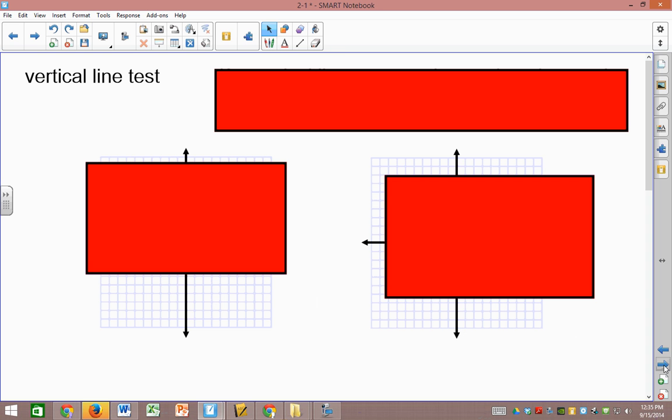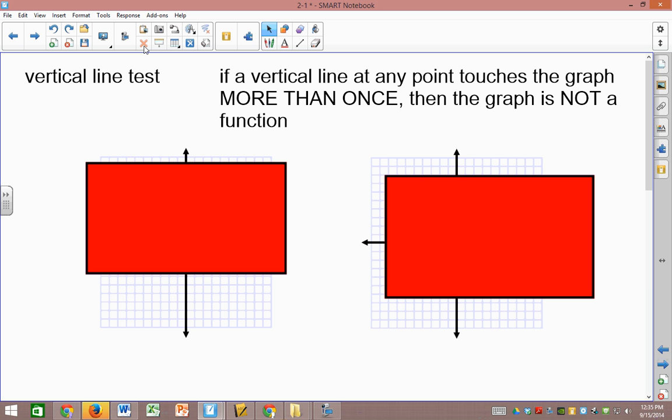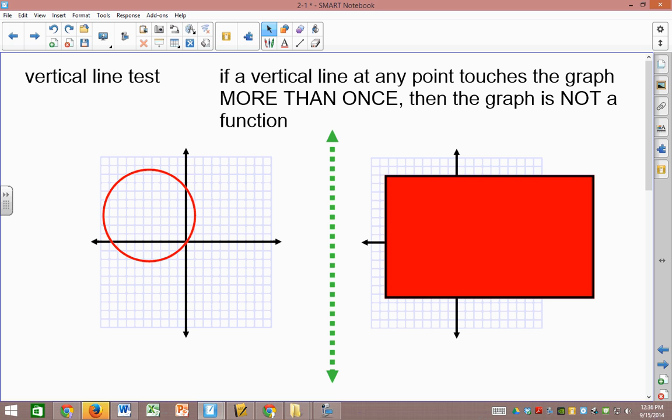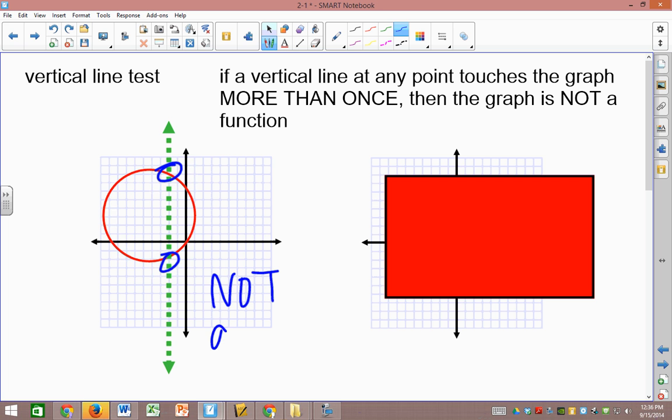The other way to tell, and this would be easier if you were given a graph, is a vertical line test. So if we graph all the points that were given, and then you've got to see if the graph touches it more than once. So the vertical line. Vertical is up and down. So what you do, you imagine drawing a vertical line or having a vertical line. And you slide it across your paper. And if at any point it touches your graph more than once, it's not a function.